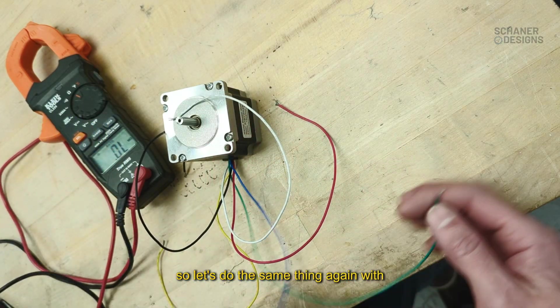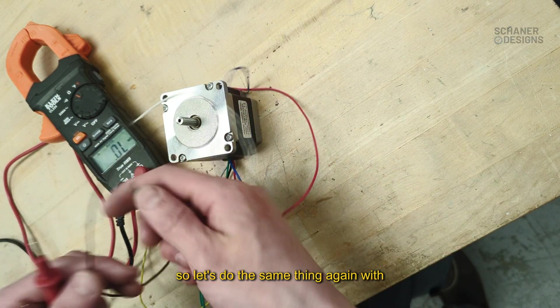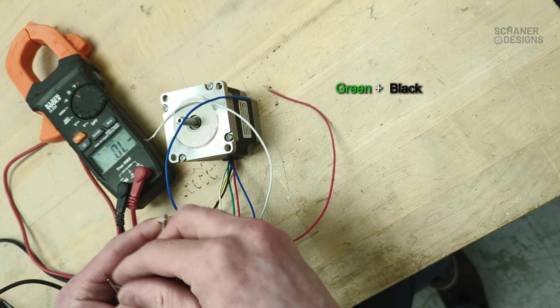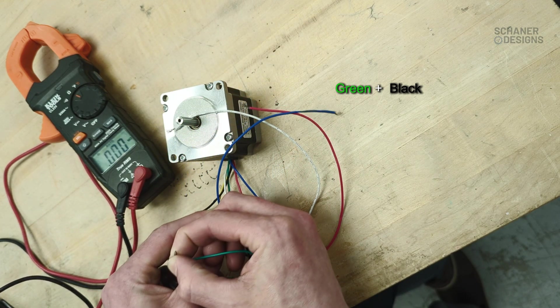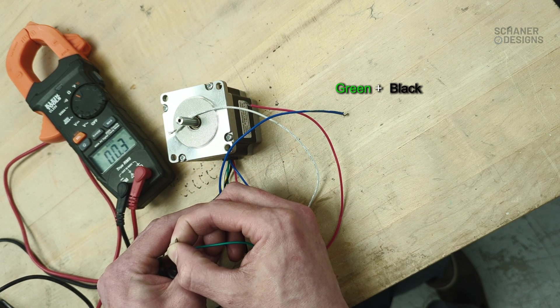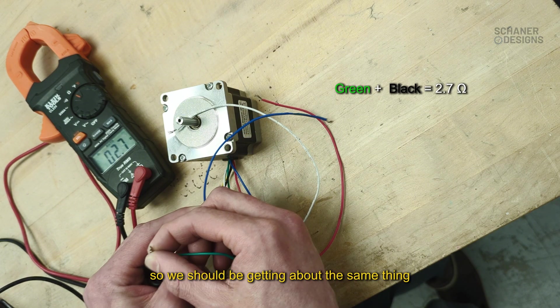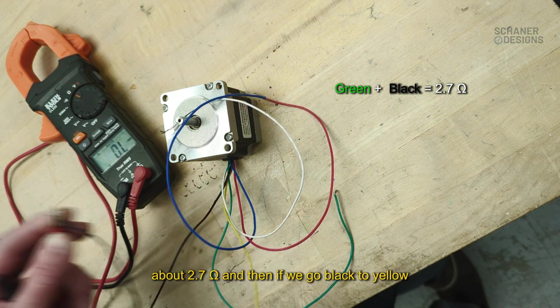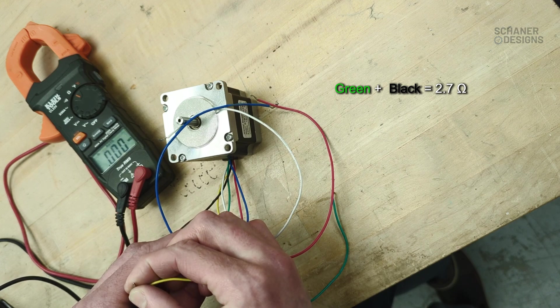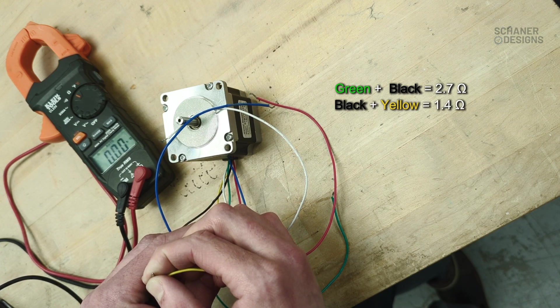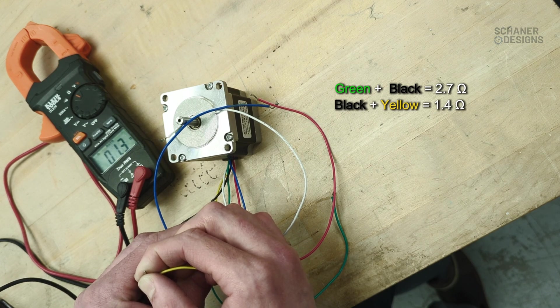Let's do the same thing again with green and black. We should be getting about the same thing, about 2.7 ohms. And then if we go black to yellow, we get about half that.